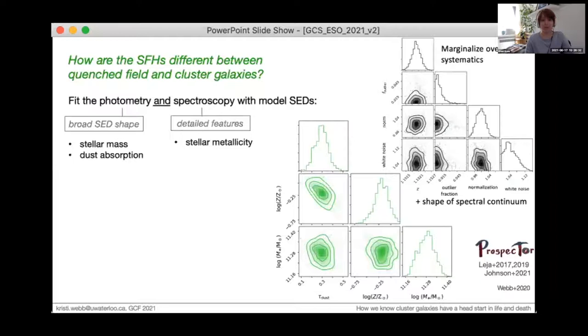Here are just two corner plots for the galaxy shown in the last slide, where the posteriors in green are the galaxy properties that we're interested in, and the second plot shows the posteriors of the parameters that we have to marginalize over, which are related to the uncertainties in the data or systematics.